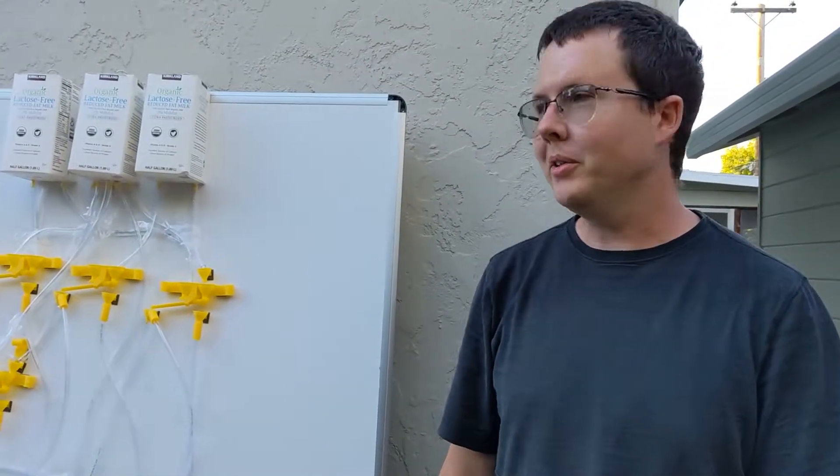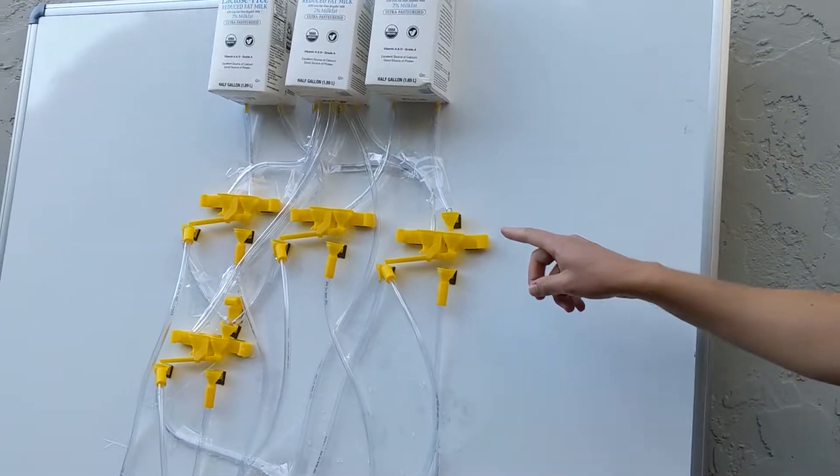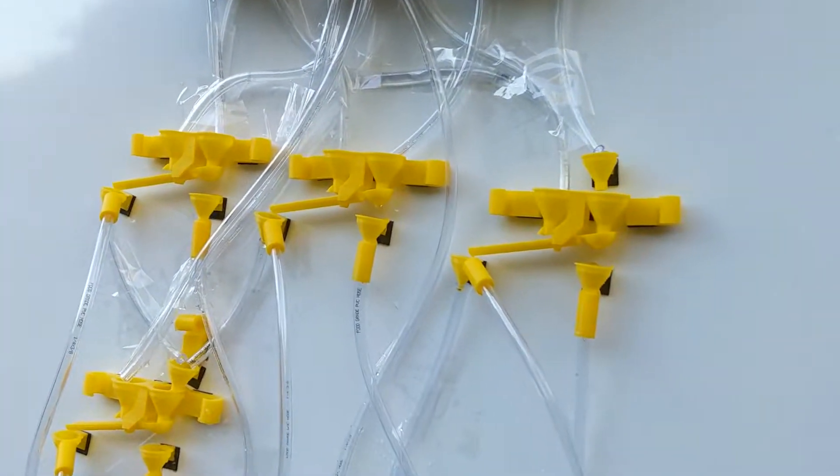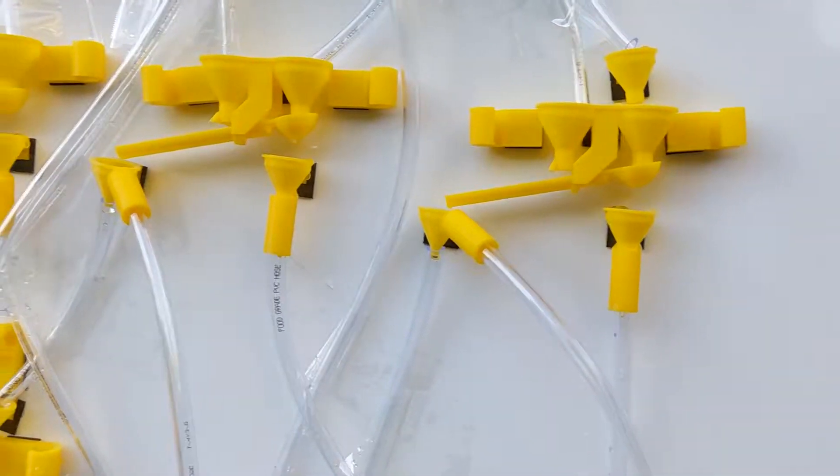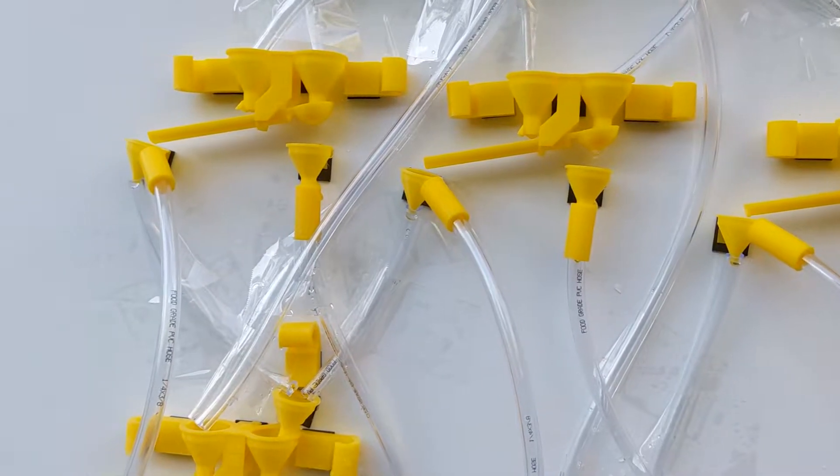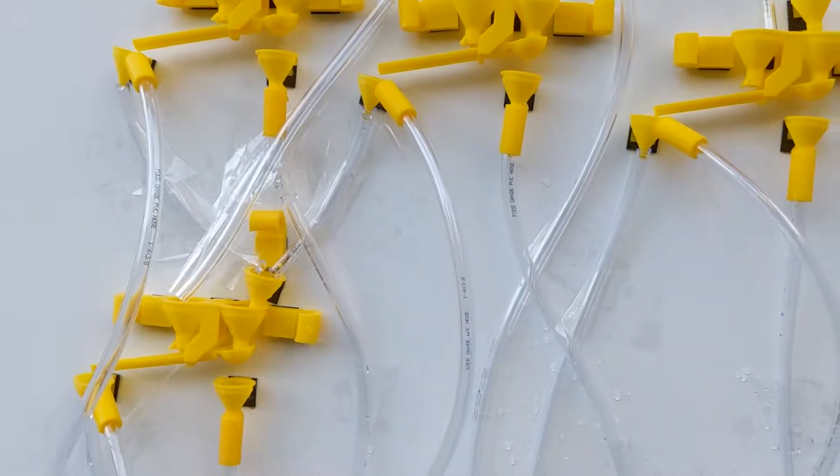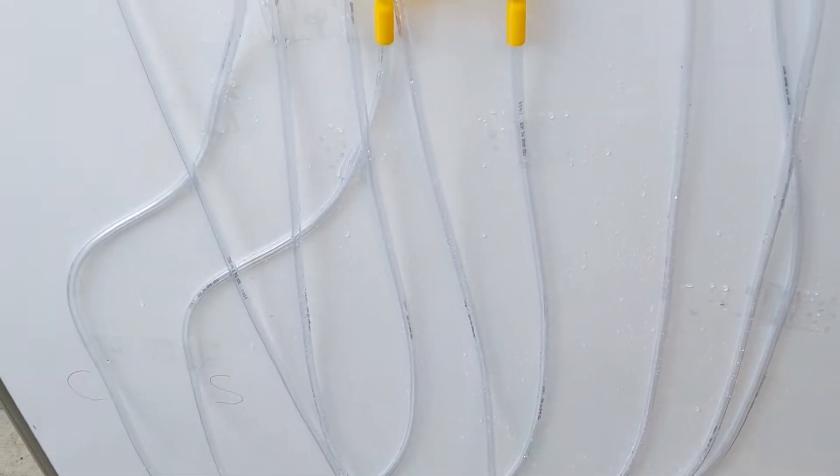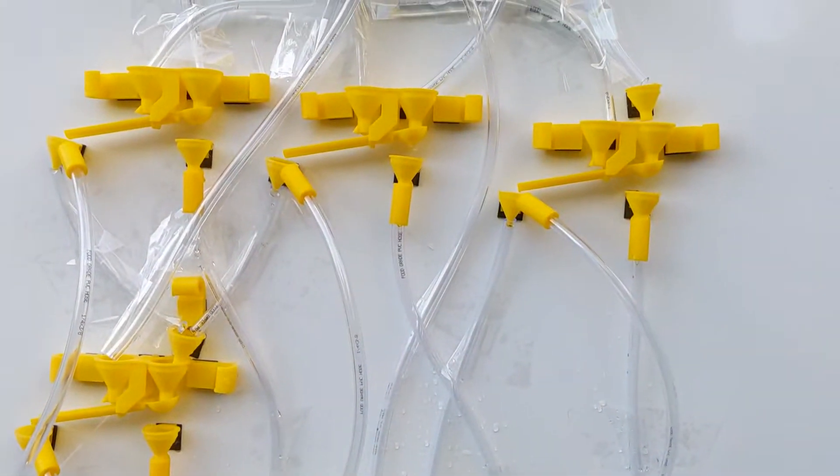So this is a water computer that I've built. These yellow parts are all 3D printed. It can be used to represent binary logic circuits, and it is Turing complete. So if you had a lot of different parts, you can build any computer that you want.